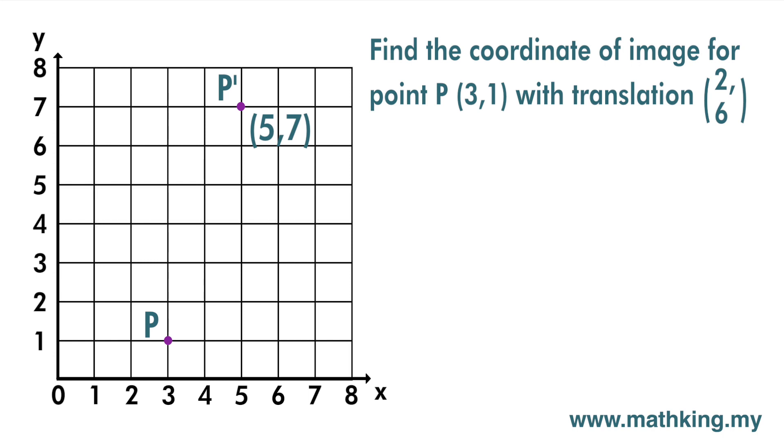Note that we can get coordinate 5 by adding coordinate 3 with the horizontal movement of 2. And we can get the coordinate 7 by adding coordinate 1 with the vertical movement of 6.